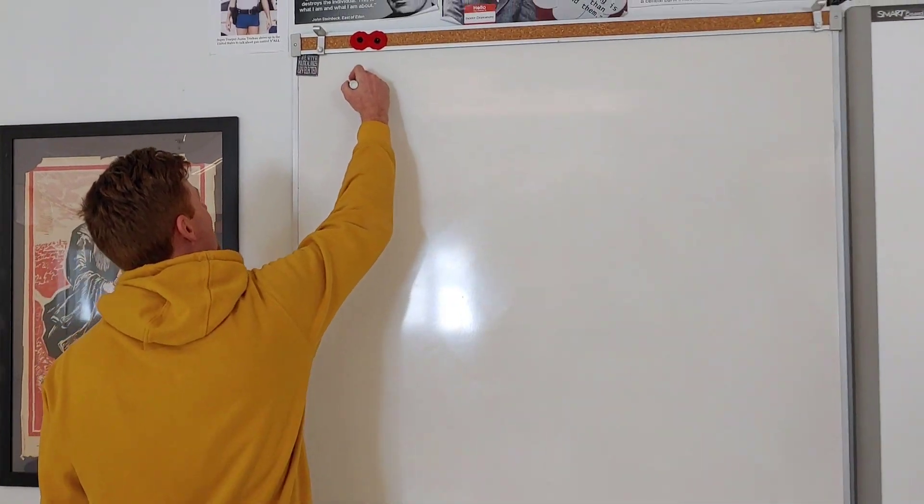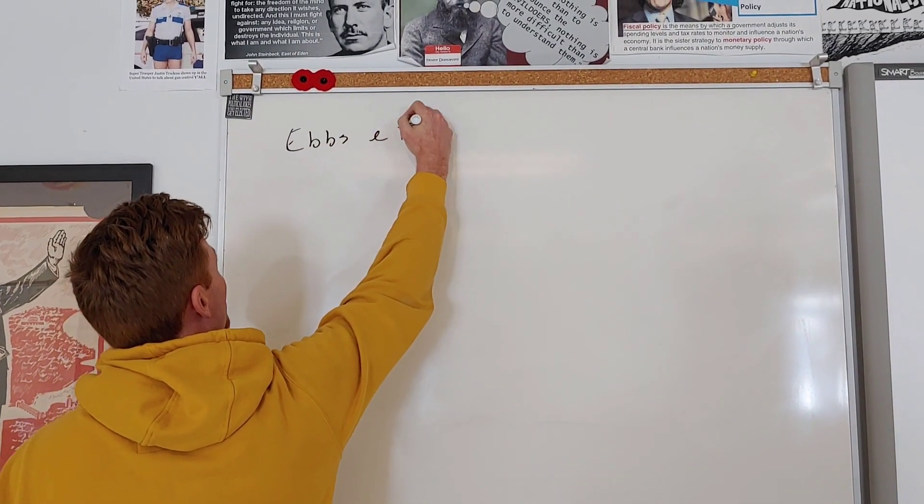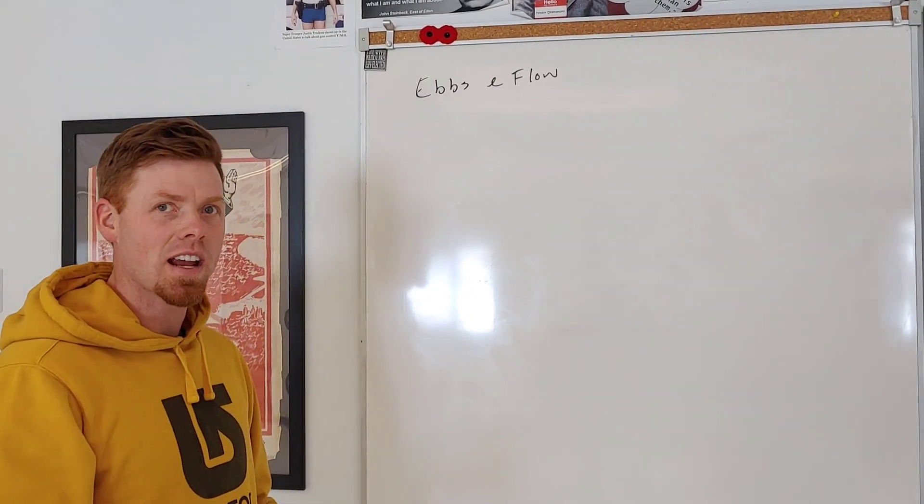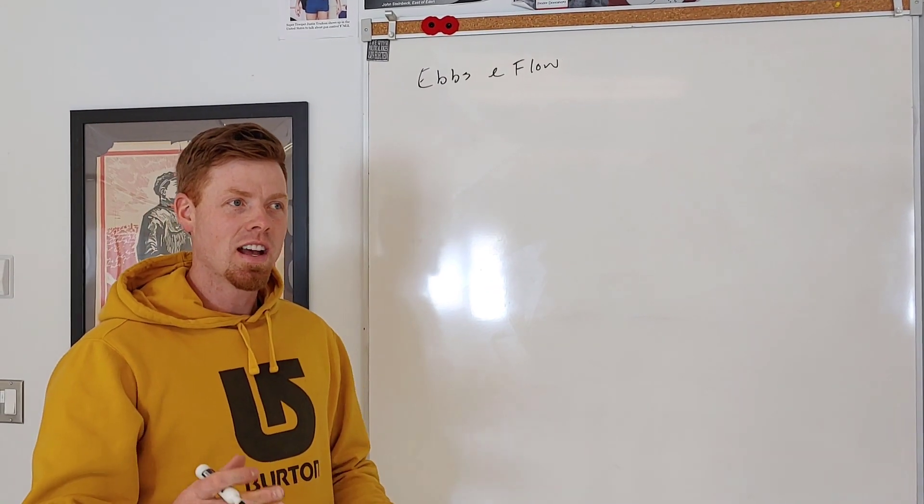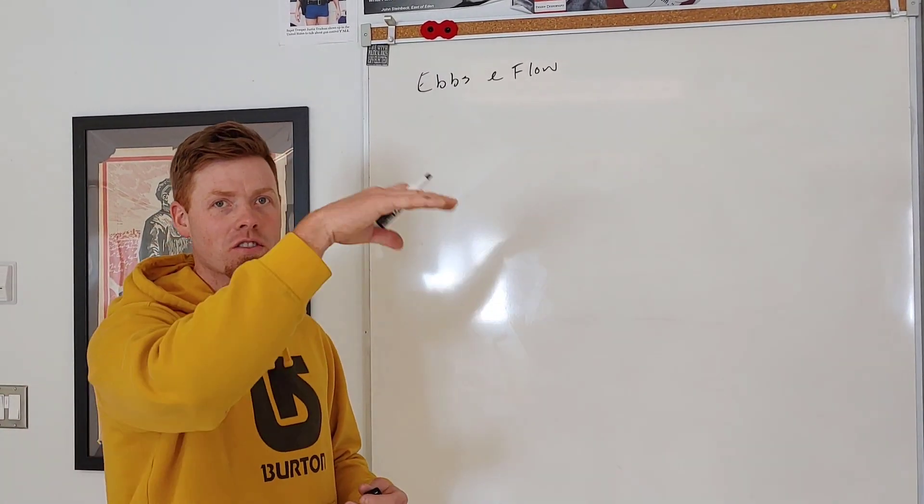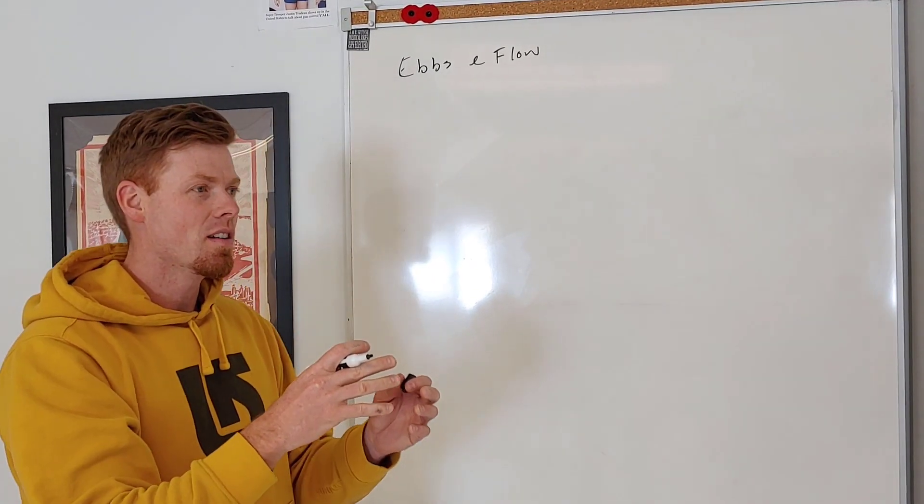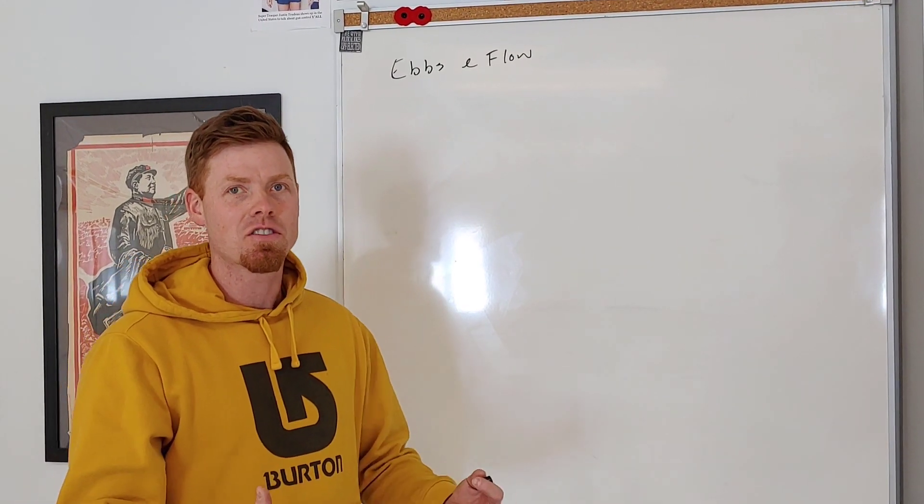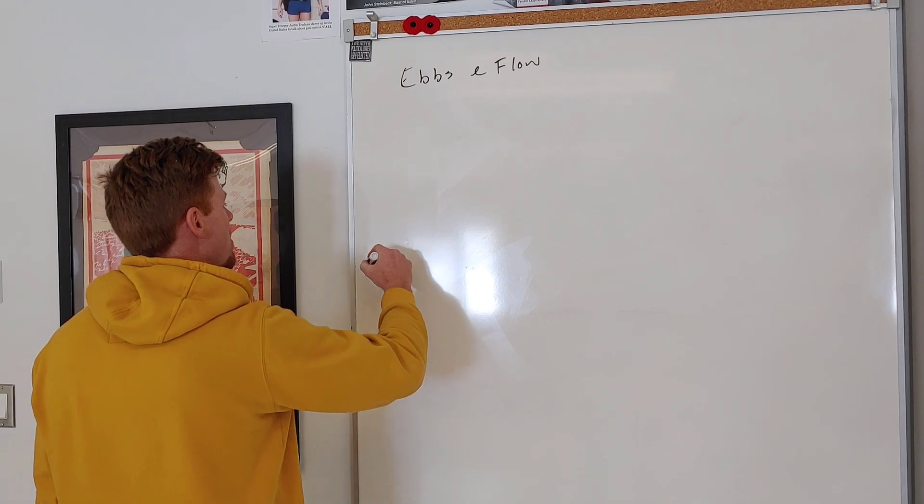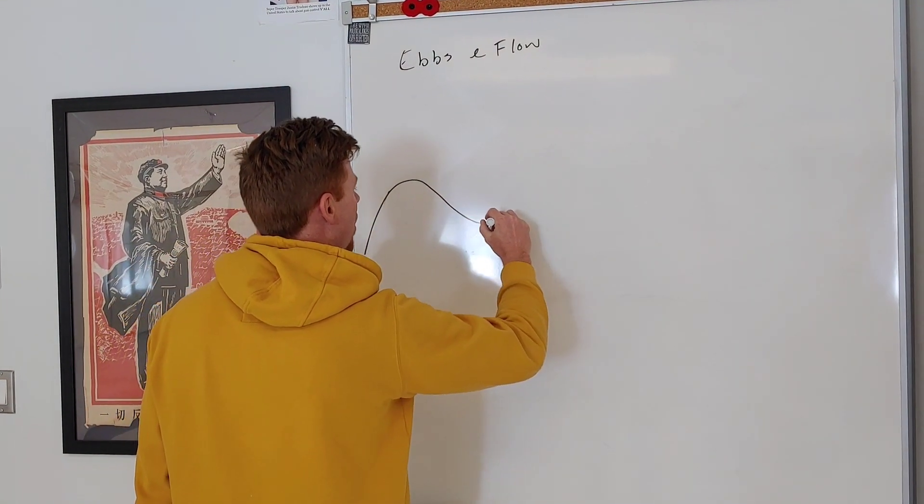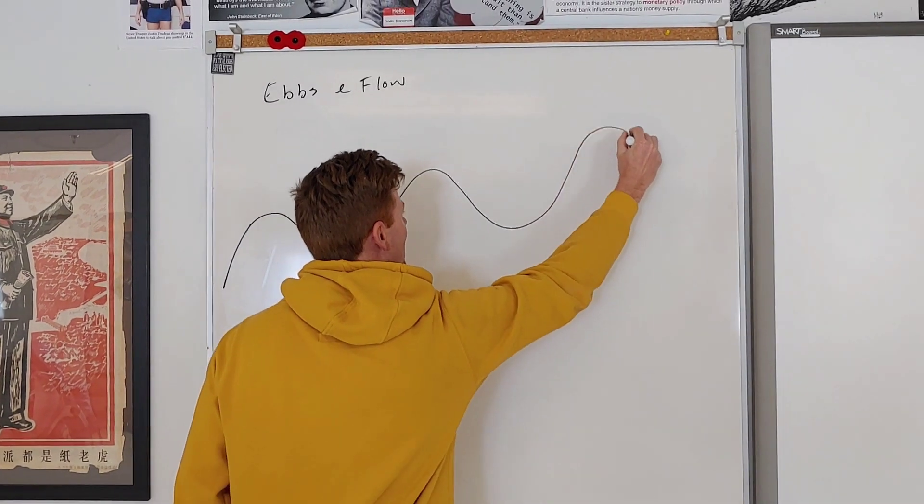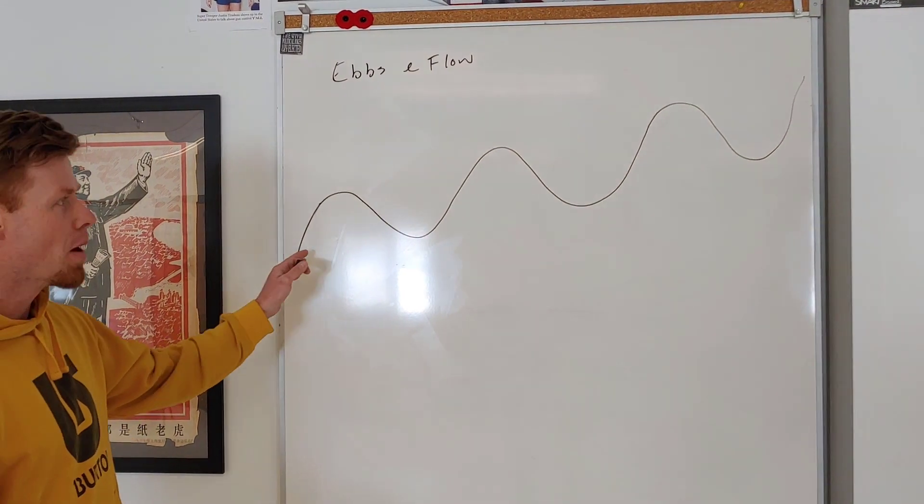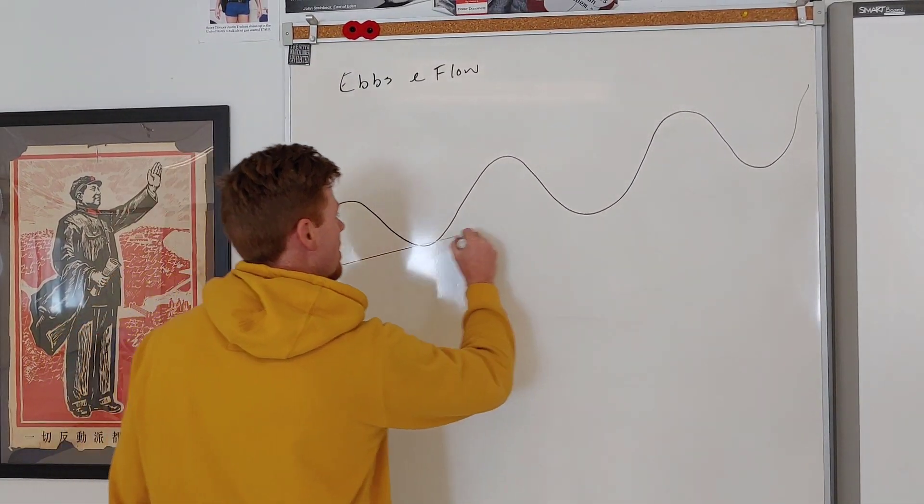Before this time period, when capitalism was at its height in America, most people believed the economy functioned through what was called ebbs and flow, which essentially means that the economy, like a river or an ocean, rises and falls with waves. There's nothing that we do to change that. It does that all on its own, runs itself naturally. Over time, the economy will generally rise. That was the belief.